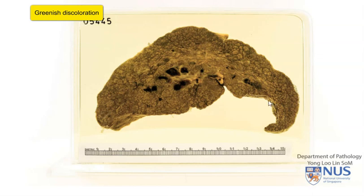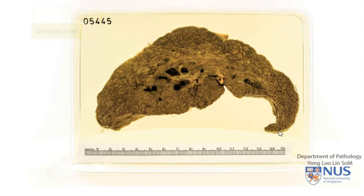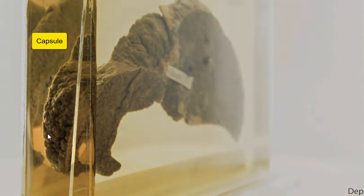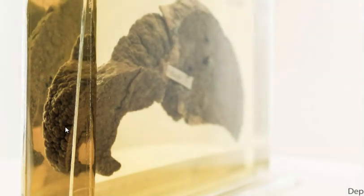What we have here is a cirrhotic liver with a greenish discolouration. Most likely, this liver would also be smaller. If we look at the capsular surface, as we can see here, we can actually make out the nodularity very clearly indeed. Because the cirrhotic nodules are so small, this is micronodular cirrhosis.